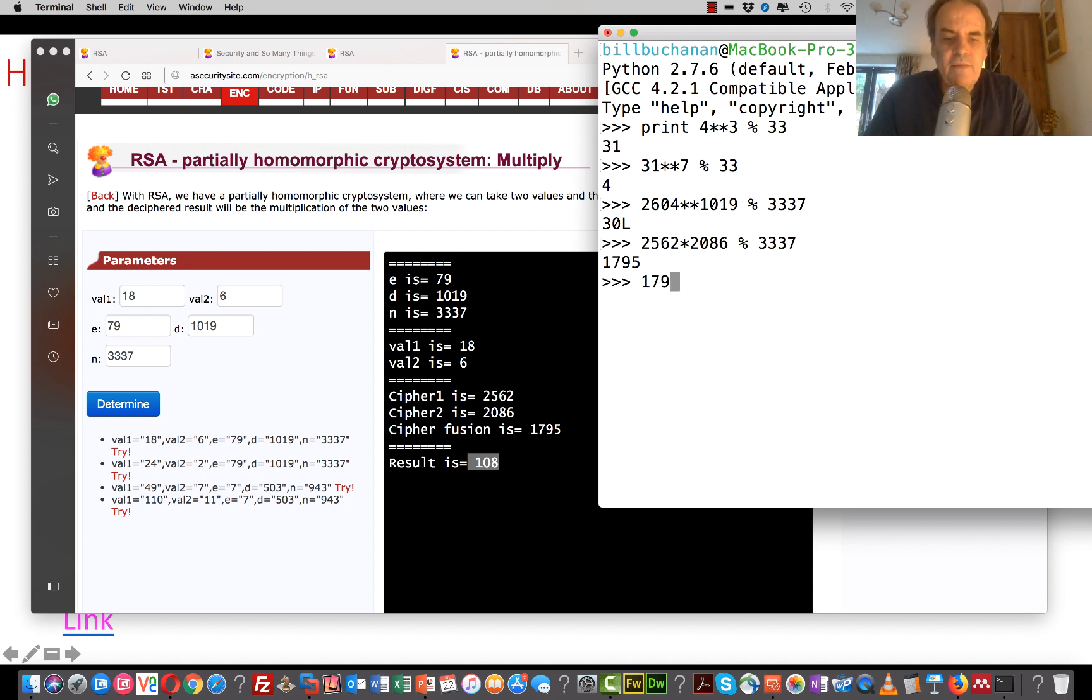We'll take 1795. Raise it to the power of the decryption key, which is 1019. And we'll take the mod of 33337. And hopefully we'll get 108, which is correct. So that's 18 times 6. So that works fine.